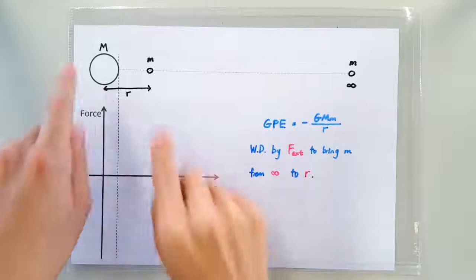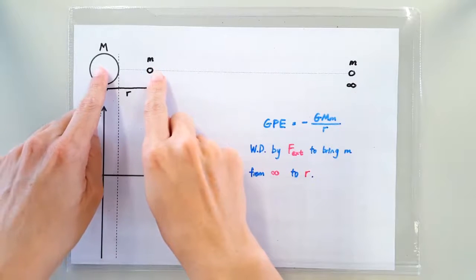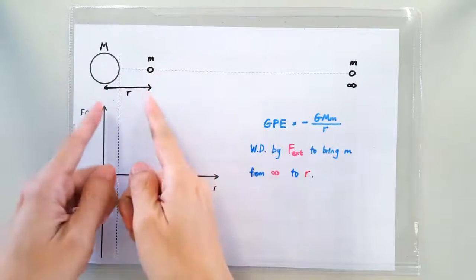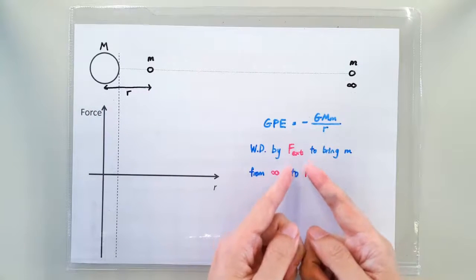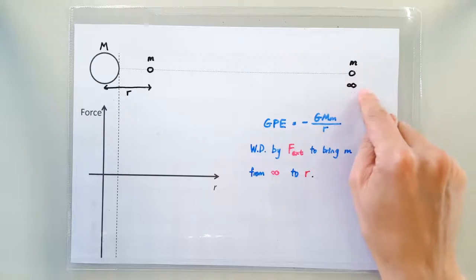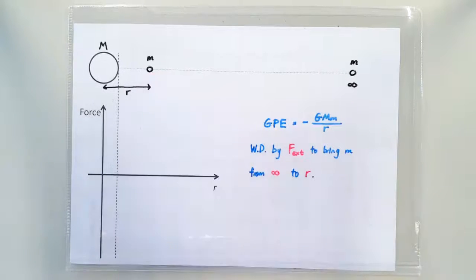So according to definition, the GPE stored in a pair of masses M and m when they are separated by a distance R is the work done by the external force to bring that small mass m from points at infinity to that position there.